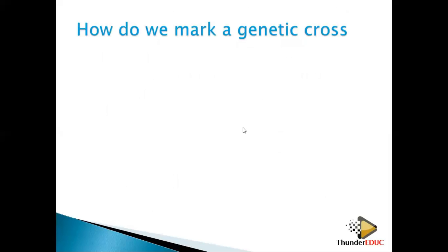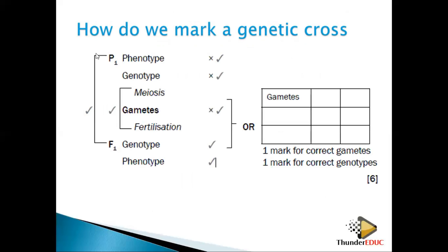That is how we mark a genetic cross. P1 and F1 earn you a tick; meiosis and fertilization earn you a tick; writing the phenotype earns you a tick; writing the genotype earns you a tick; crossing the gametes correctly earns you a tick; and writing the final phenotype earns you a tick. P1 and F1 can change to P2 and F2 for the second generation.